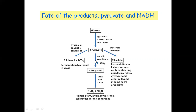Under aerobic conditions, pyruvate releases carbon dioxide and is converted into acetyl-CoA. Then by the process of the citric acid cycle, acetyl-CoA is converted into carbon dioxide and water. This process occurs in normal human bodies and animal bodies and plants.